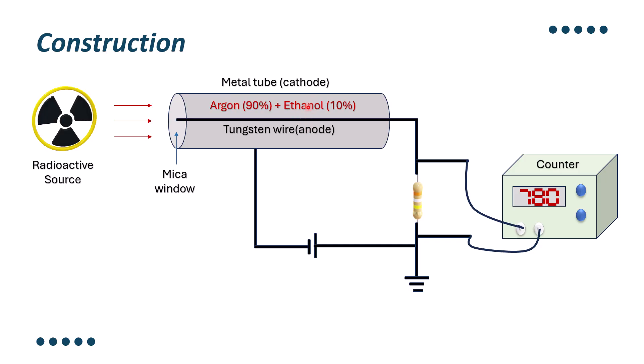Positive ions will go towards the cathode side, negative ions will go towards the anode side. Due to that, there will be generation of current. That current is converted into the count with the help of this counter. So basically, this is the construction of GM counter.